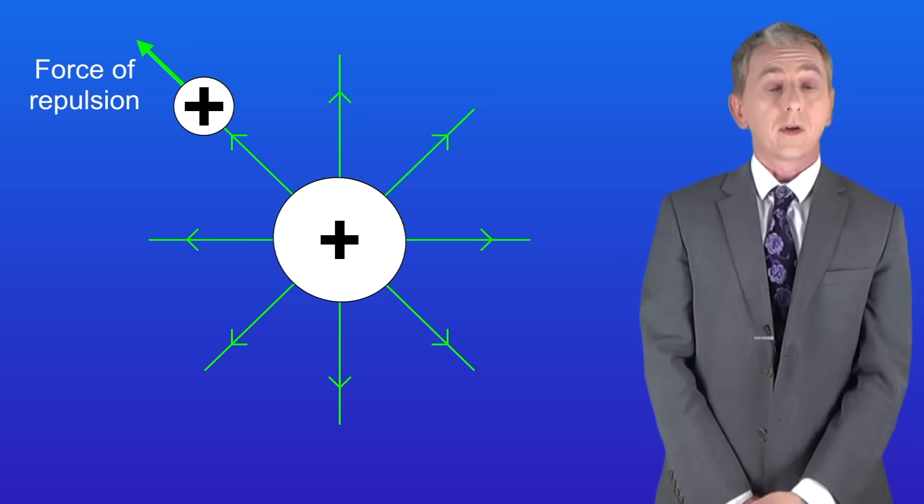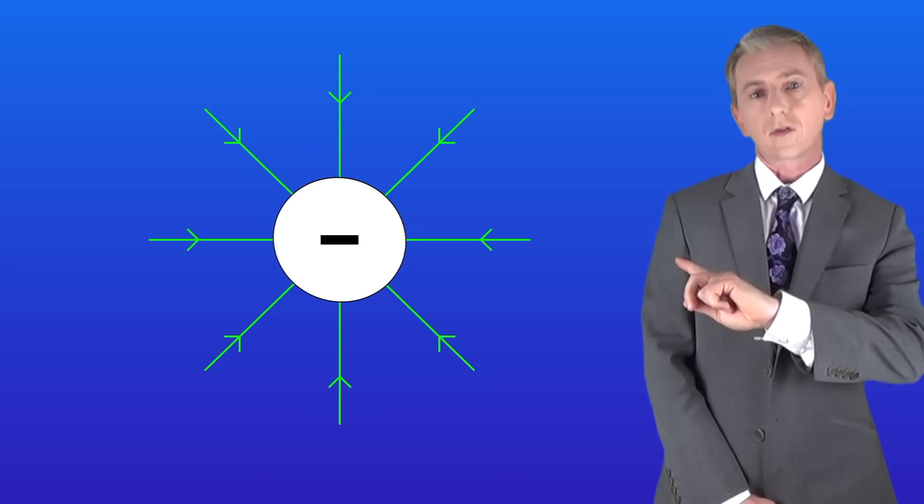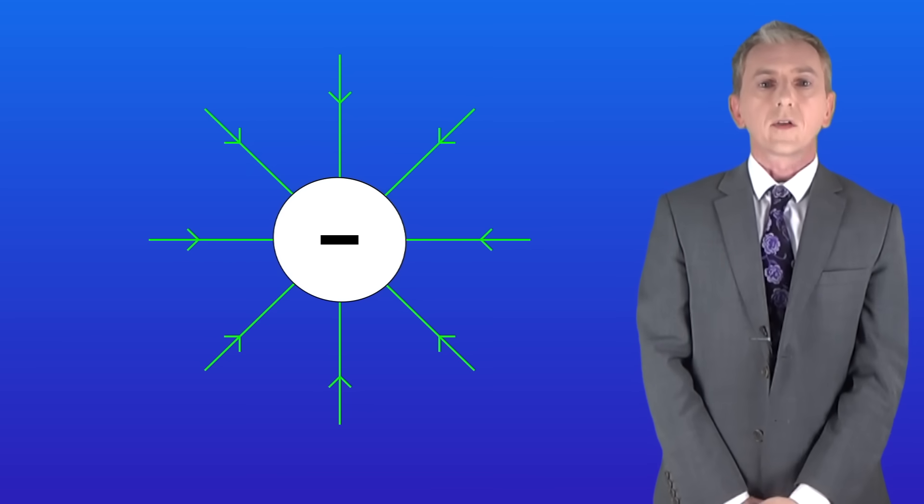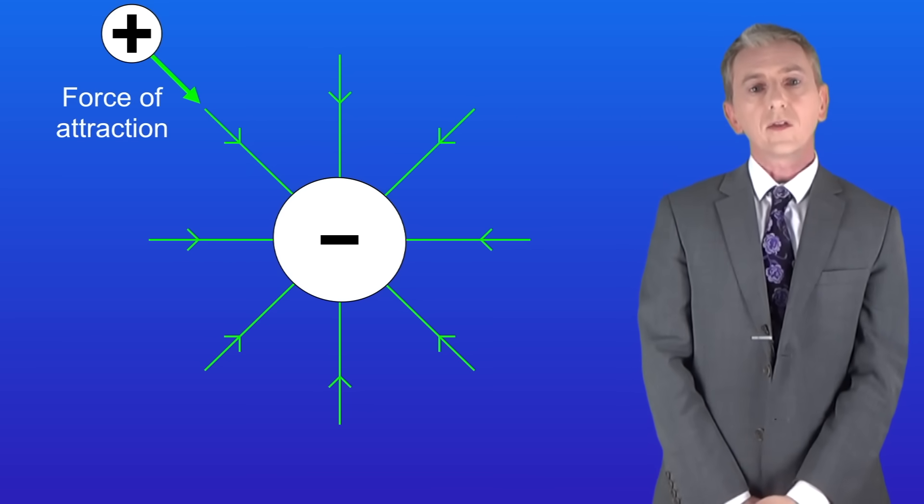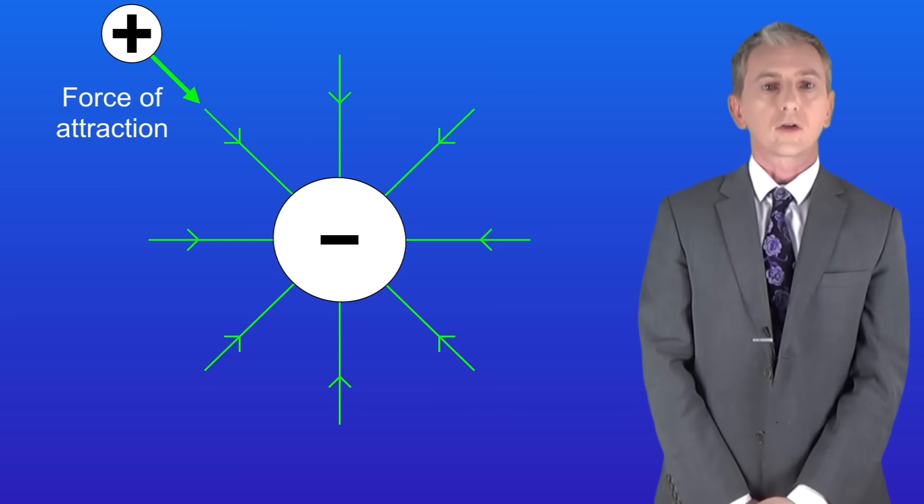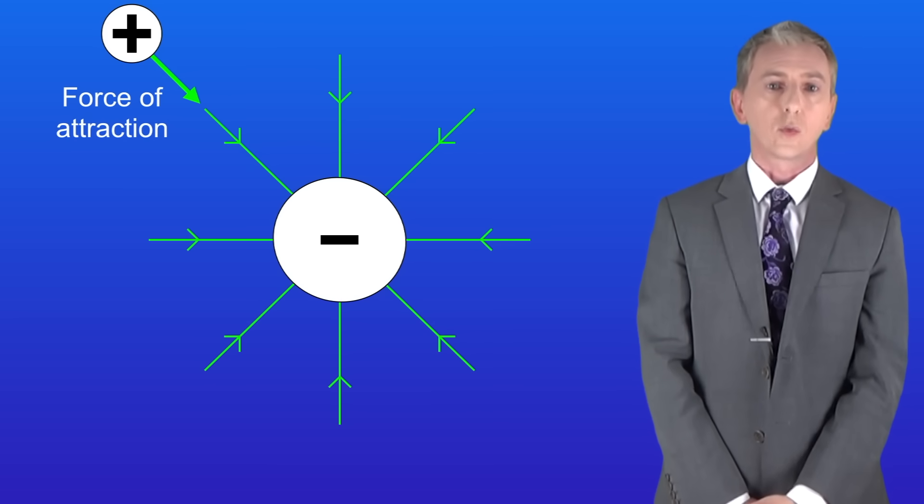The field lines for a negative object look like this. Now you can see that if we bring a positive object near this charge, it will experience a force of attraction. We can see that as the arrows are now pointing inwards towards the charge.